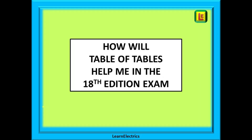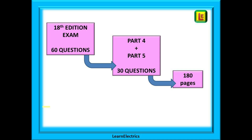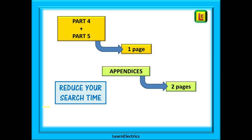So how will table of tables help you in the 18th edition exam, or indeed any exam on the wiring regulations? The 18th edition exam has 60 multiple choice questions. There are eight parts to the book plus the appendices, but parts four and five alone will account for about 30 questions — that's 50% of the exam questions in just 180 pages. The table of tables can reduce your search time because the tables of parts four and five are listed on just one page and a bit.